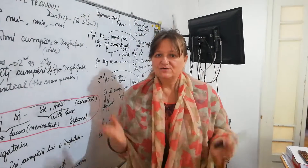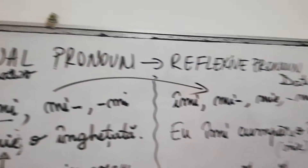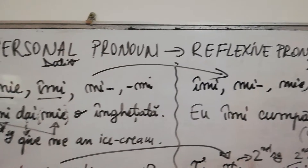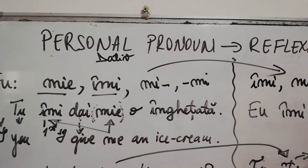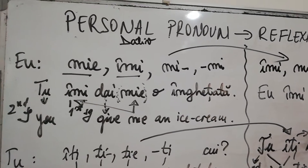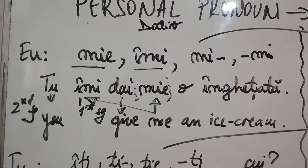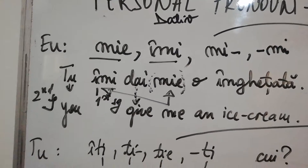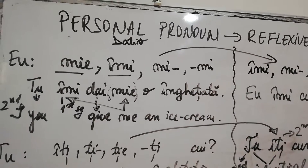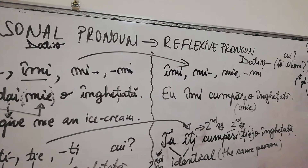Hello again, let's go to the second part of our lesson. We make a comparison here between personal pronoun and reflexive pronoun. I remind you that in the first part we talked about the accusative, and now about dative. Dative in Romanian answers to the question 'cui' - to whom. I give something to someone - 'cui', to whom.